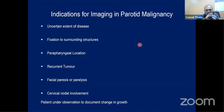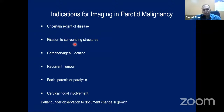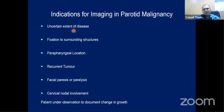Coming to imaging: if FNA shows mucoepidermoid carcinoma, grading cannot be done by FNA alone, so imaging is needed. MRI is preferred over CT. MRI is helpful in most situations - particularly for evaluating extent of disease, deep lobe involvement, intraparotid nodes, parapharyngeal space involvement, perineural invasion, fixity to the masseter, mandible involvement, and extension to the base of skull.